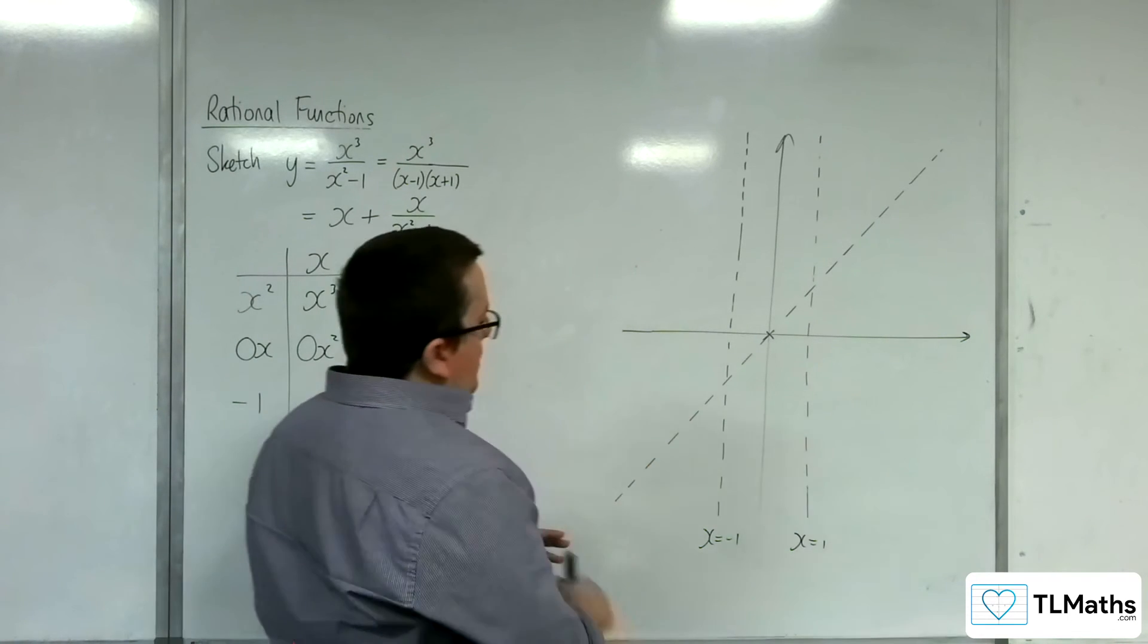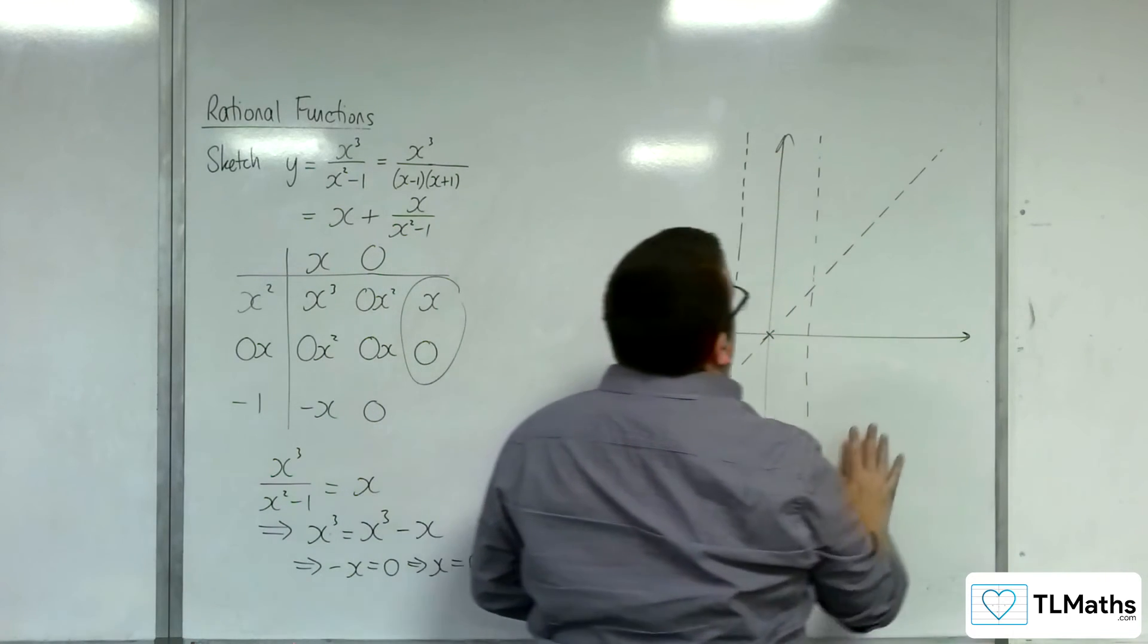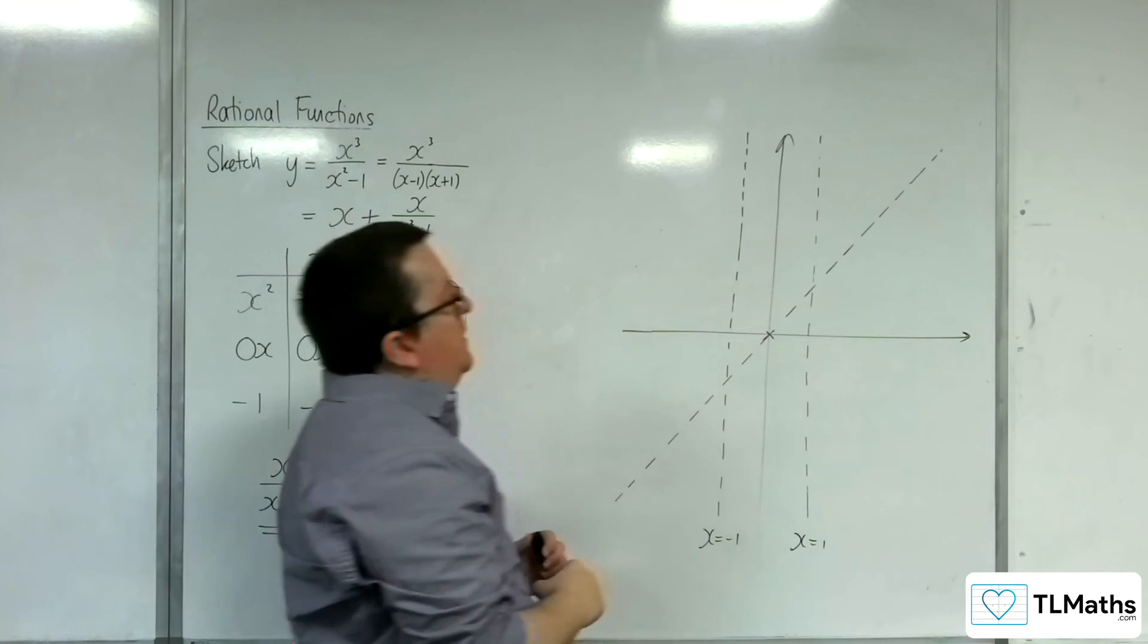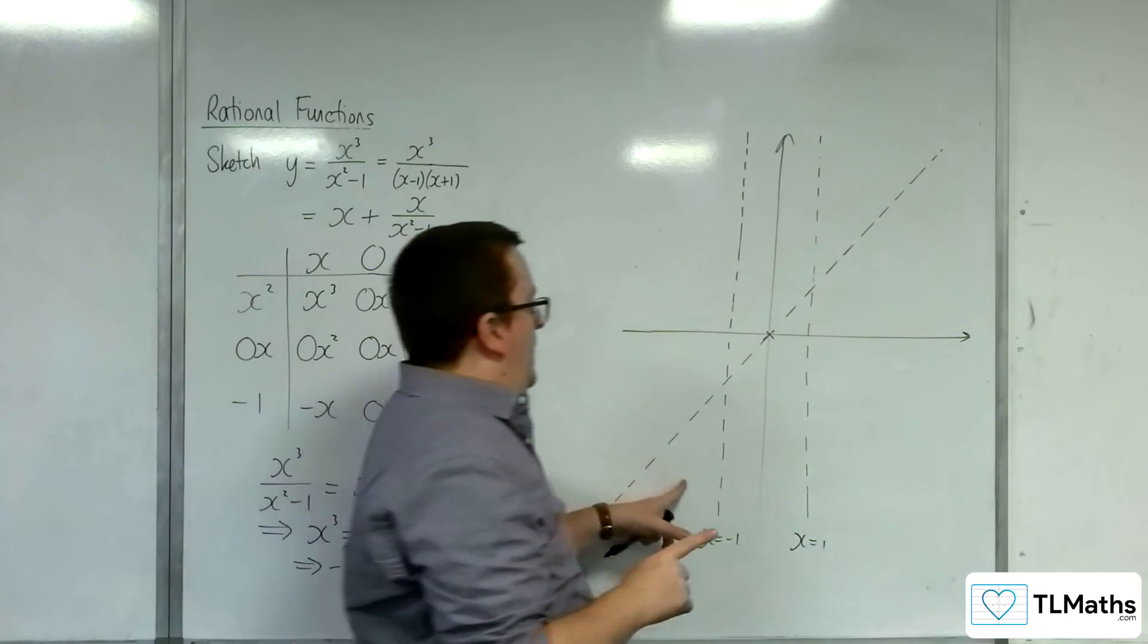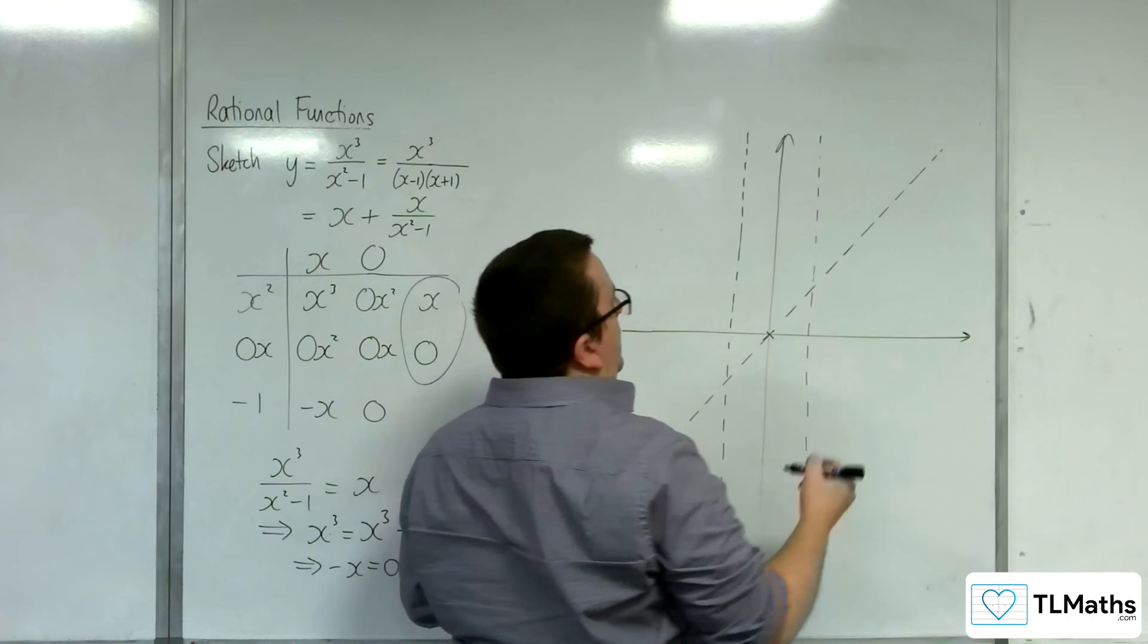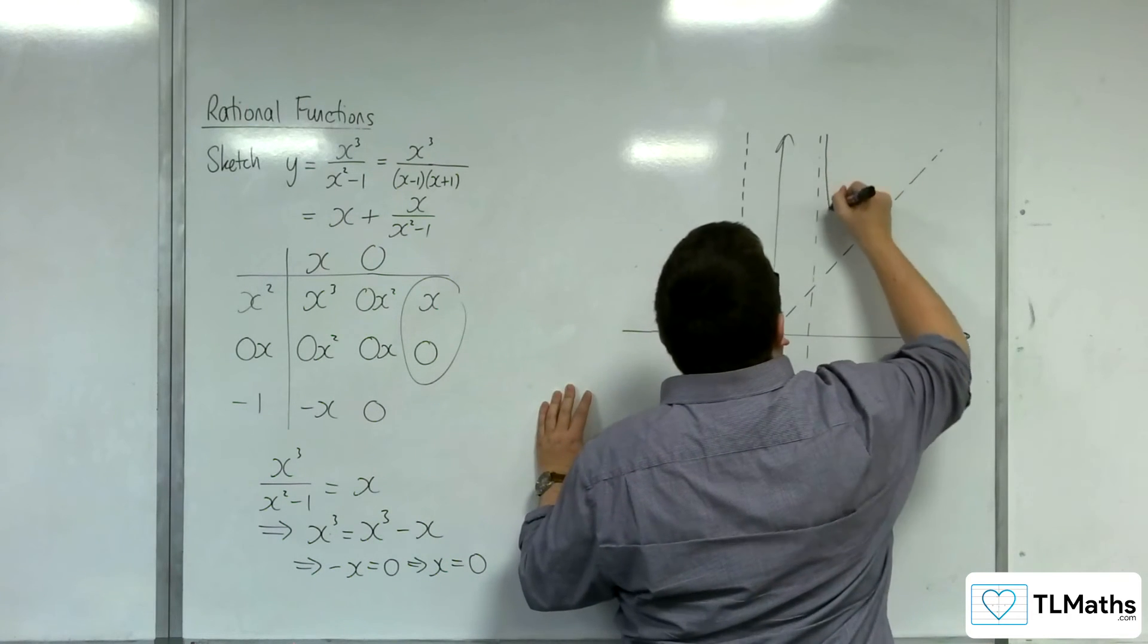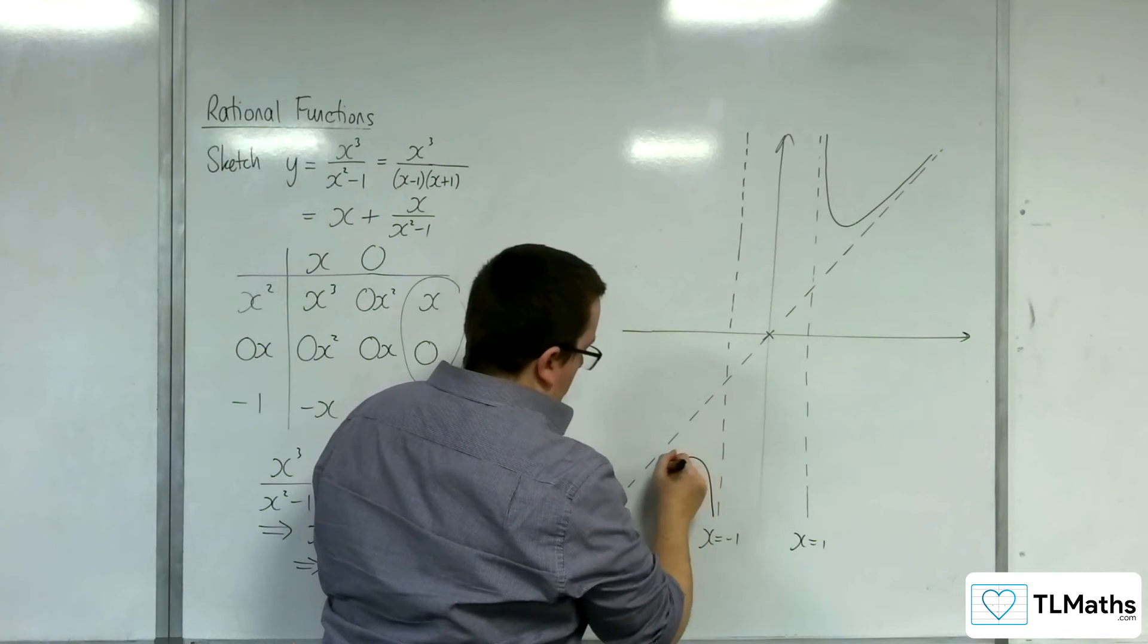We've got this bit here, this bit in the middle, and this bit over to the right. Now we can kind of guess what's going to be happening here and here, because the curve has got to tend to both those asymptotes, the curve has got to be doing something like that, and like that.